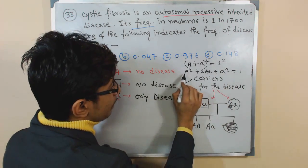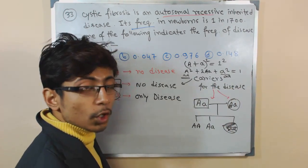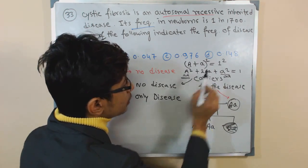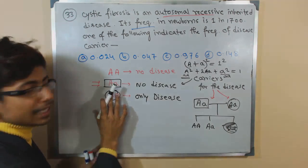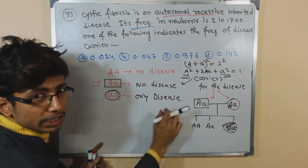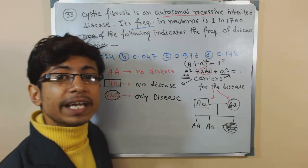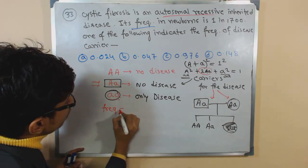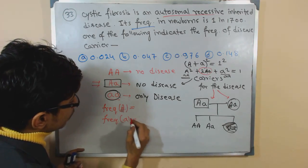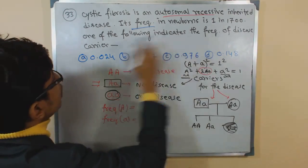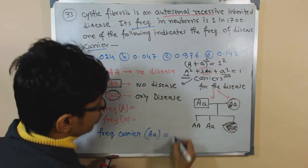In this expanded equation: A² represents homozygous dominant (no disease), small a² represents homozygous recessive (disease), and 2·A·a represents heterozygous (no disease, but carrier). The frequency of the carrier — capital A small a — is calculated using the formula: 2 times capital A times small a. To find this, we need the frequencies of both capital A and small a.